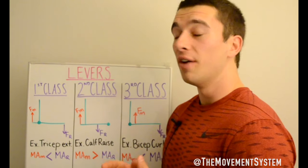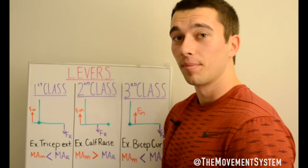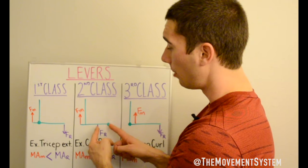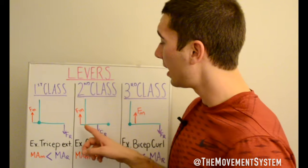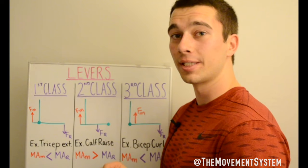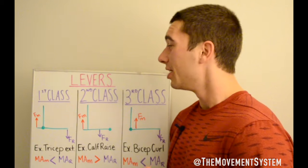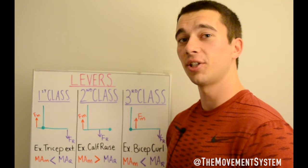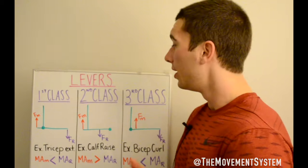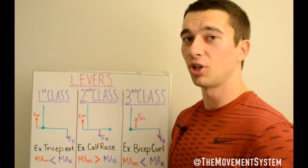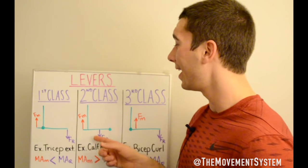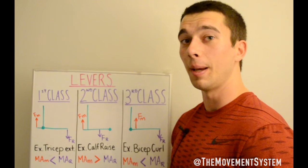Practice question: in a second-class lever, is there a mechanical advantage for the resistance or the muscle? Since the moment arm of the muscle is longer than the moment arm of the resistance, the mechanical advantage is actually for the muscle — the muscle has to apply less force than the resistance. Second example: during a slow and controlled bent-over row, what muscle levers are acting at the elbow? The biceps are pulling up concentrically and the triceps eccentrically control the lowering, so we have a first and a third-class lever working at the elbow joint.